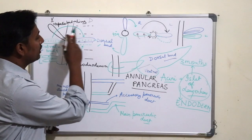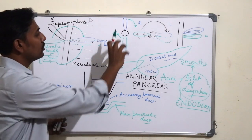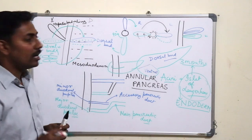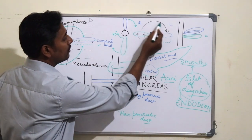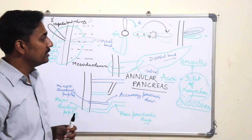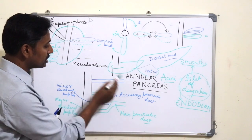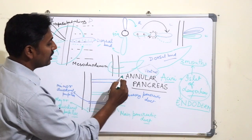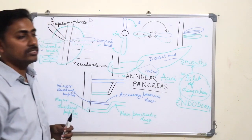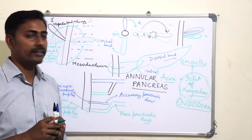To summarize, we have seen how the pancreas develops from the ventral bud and the dorsal bud; how rotation of both buds occurs due to the rotation of the duodenum; how the ventral bud comes to lie below the dorsal bud due to the differential growth of the dorsal bud; which part of the pancreas is formed by which bud; how the ductal system of the pancreas is formed; what is the embryological basis of annular pancreas; and at which month insulin secretion begins.